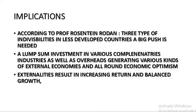So three types of indivisibilities are required. A big push is given to the economy so that it can achieve economic development: lump-sum, massive investment in various complementary industries that are interdependent, and social overhead infrastructure must be created. Then the economy will have all-round economic development. When external economies are present, industries will enjoy increasing returns to scale and there will be balanced growth.